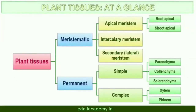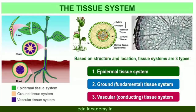6.2 The Tissue System. We were discussing types of tissues based on the types of cells present. Let us now consider how tissues vary depending on their location in the plant body, as their structure and function would also be dependent on location. On the basis of their structure and location, there are three types of tissue systems: the epidermal tissue system, the ground or fundamental tissue system, and the vascular or conducting tissue system.